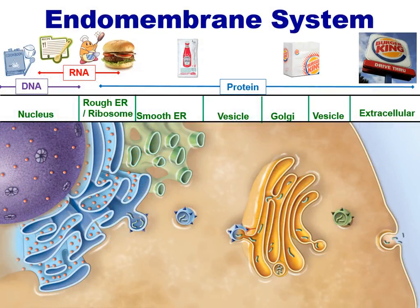Viewing the system as a whole, you can see how the nucleus stores the information, which is then copied into RNA and translated into protein. The protein is then modified and can be packaged at the Golgi, traveling through vesicles in between some of these different organelles. Proteins, or a collection of different proteins packaged in vesicles, either at the Golgi or leaving the Golgi, can travel to different parts of the cell where they may be needed. They can also fuse with the plasma membrane in a process known as exocytosis and be released from the cell.